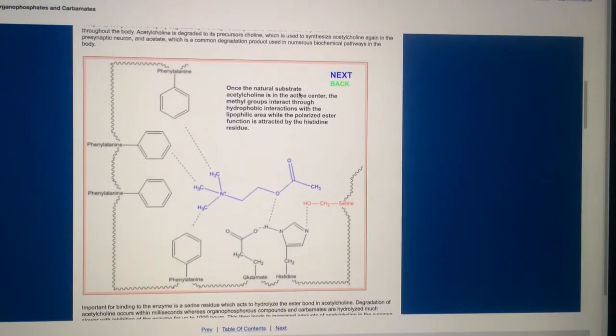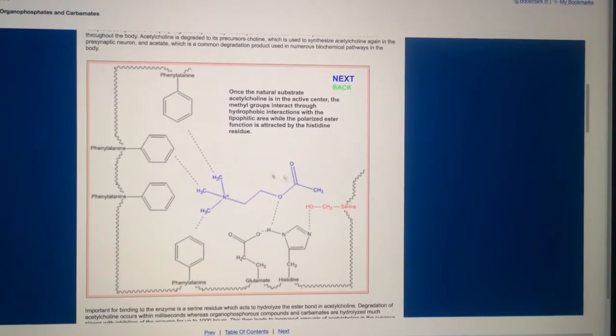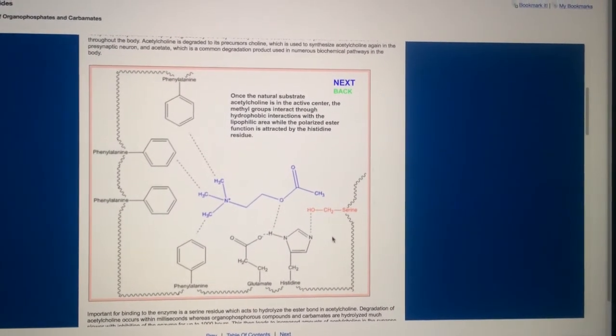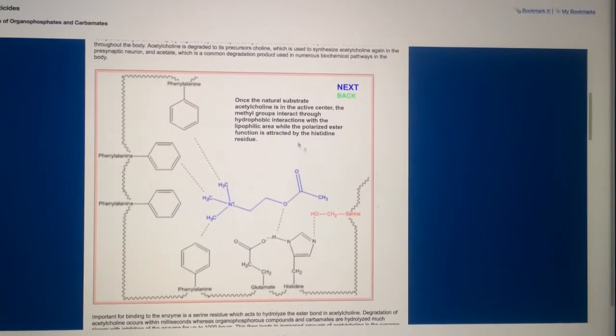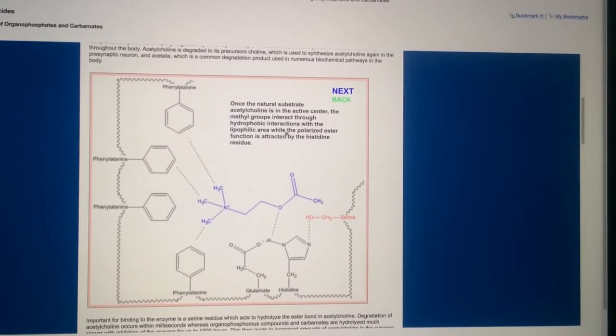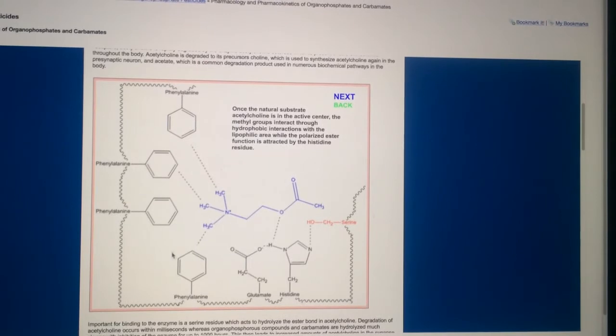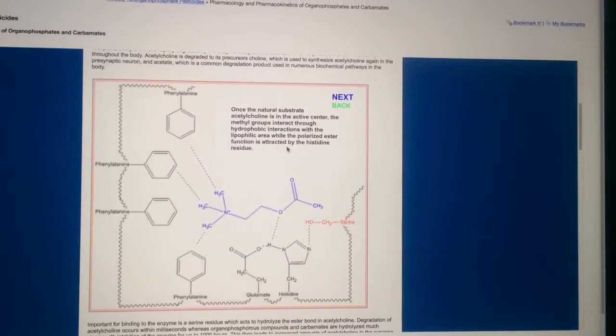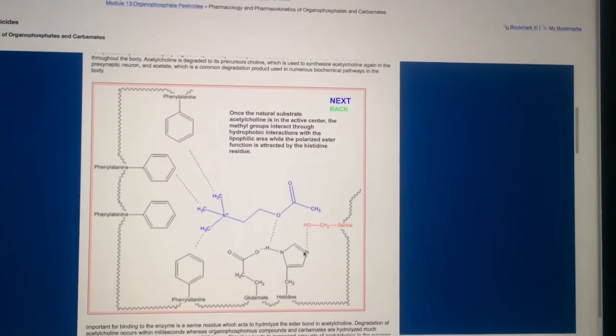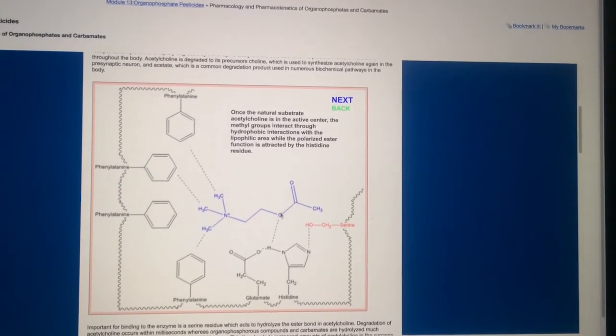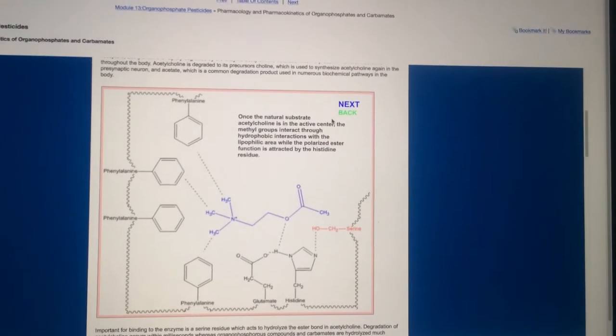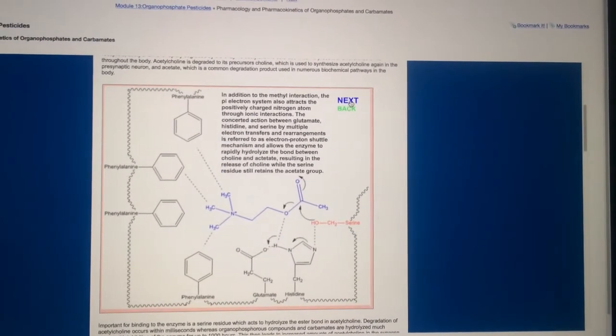So it just says once the natural substrate, so acetylcholine is a substrate, it's going to come in, it interacts with the enzyme. So you have hydrophobic interactions right here in the lipophilic area, and you have this polarized ester function is attracted to the histidine residue. That's this oxygen here, it's polarized, it's attracted to this polar group here. So now it's in, and what's going to happen?